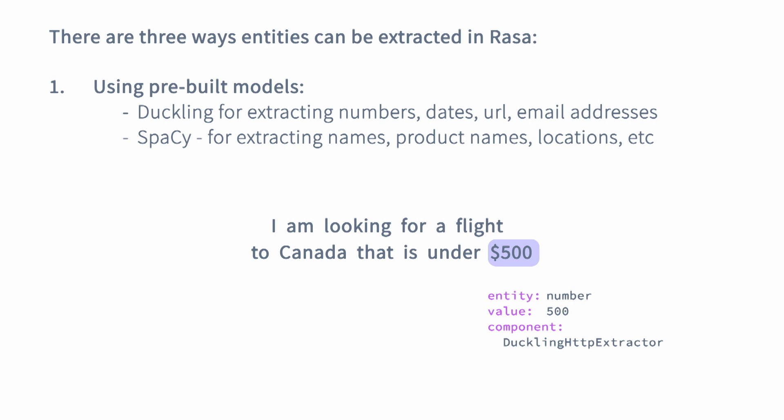The best part about Duckling is that it requires no training data for your assistant to extract those details. Another really powerful library, spaCy, enables you to use pre-built models to enhance entity extraction for details like person names, locations and similar. To enable your Rasa assistant to use pre-built models, all you have to do is reference those models in your NLU model configuration file. We will talk about those details in the later episodes of the series.